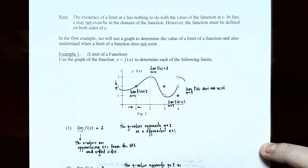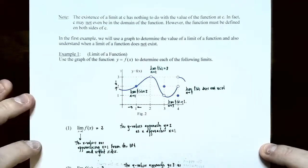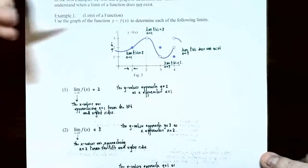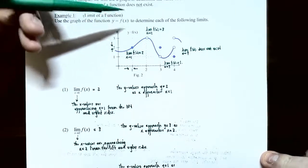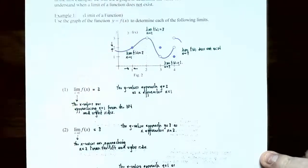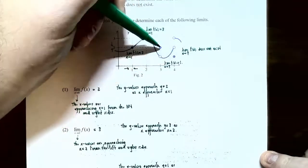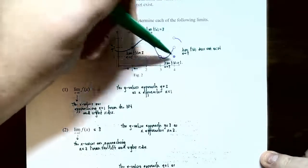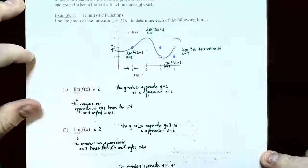So let's look at our first example. We're going to be given a graph and we'll find out what the limit is as x approaches different real numbers on the x-axis. If the limit does not exist, we'll say why it doesn't. Example one: use the graph of y equals f of x to determine each of the following limits. The graph is in dark blue, with several labeled points and four open circles indicating points not on the graph.